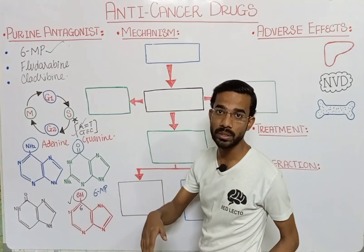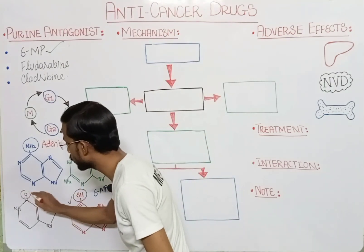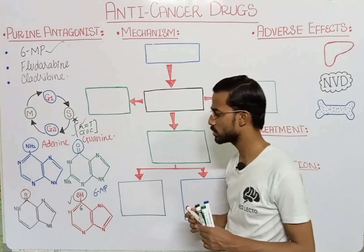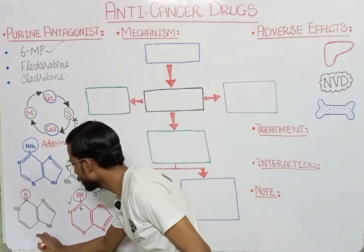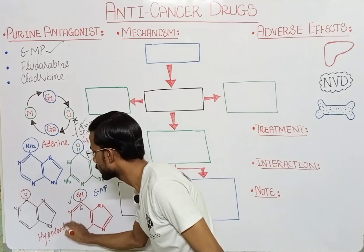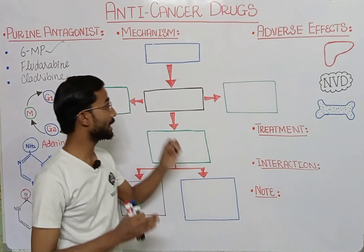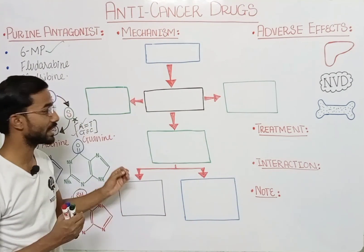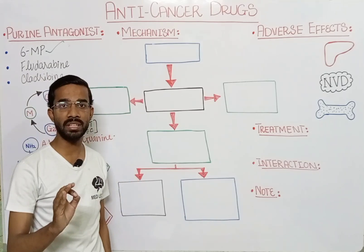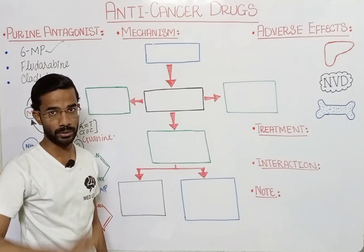6-Mercaptopurine is actually analogous to hypoxanthine. In hypoxanthine you will see an oxo group, and we call 6-MP its analog. Now we will discuss the mechanism of 6-mercaptopurine — how it blocks the synthesis of DNA or incorporates the wrong nucleotide into the DNA.